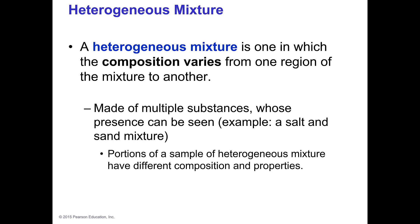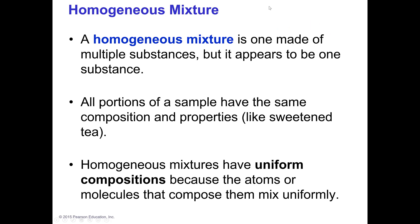If you took a sample of a heterogeneous mixture from different places, you would get different things. When I make a salad with lettuce, tomatoes, carrots, and other things, I can't homogenize it — one forkful might just be lettuce, another might have all three things, some might have salad dressing. So that's heterogeneous. Whereas if I have tomato soup that's been pureed and I take a spoonful, it's the same every time — that would be homogeneous.